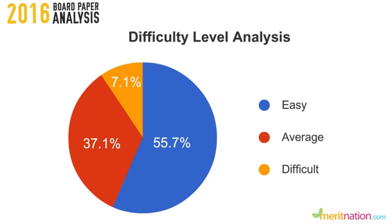Hi, you had your physics paper today and I'm sure it must have gone extremely well because it was a perfectly scoring paper. If you refer to the trend analysis of the question paper, approximately 55% of the questions were of very easy level, 37% of the questions were of moderate level, and only 7% of the questions were of a bit tough level. So overall, the paper was easy.